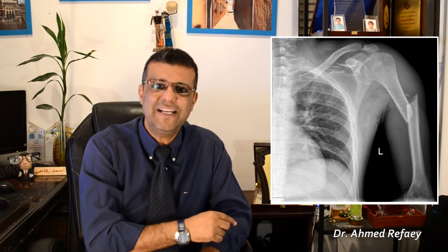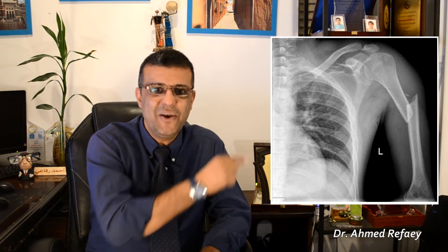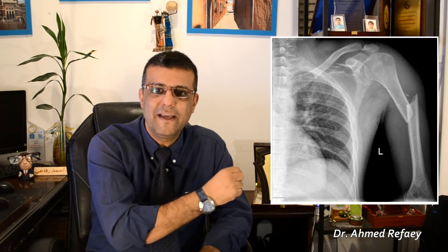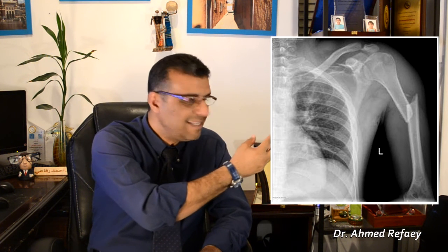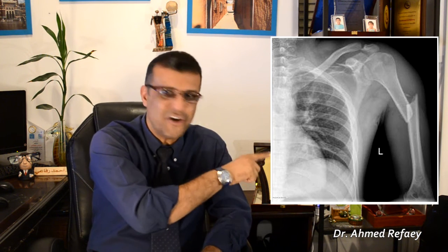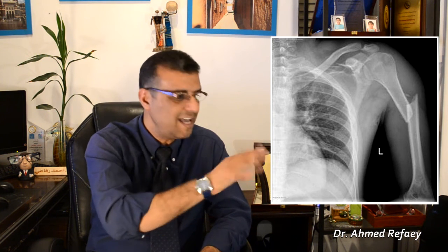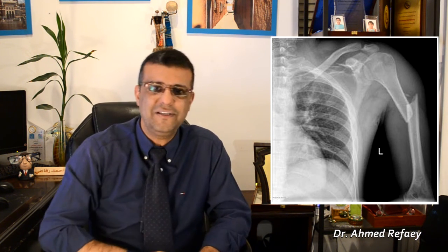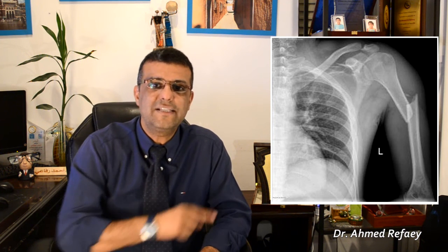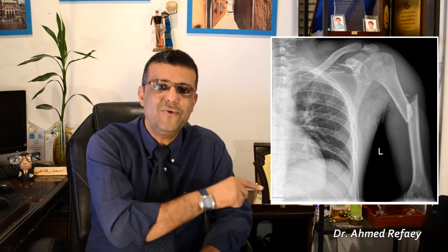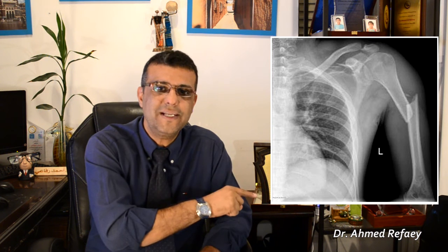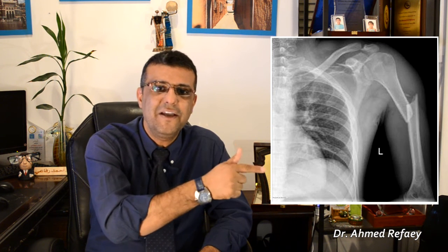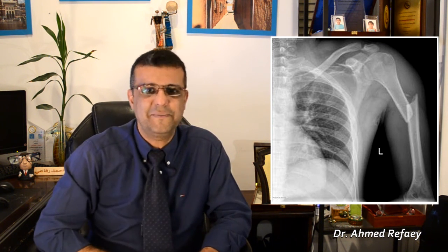There is also lateral displacement seen as a lateral offset of the distal bone fragment. Additionally, there is rotation. Looking at the shoulder joint, the humeral head appears to be projected laterally, while the elbow joint is projected in the anteroposterior position. So the full description is: complete, oblique, comminuted fracture of the mid-shaft of the left humerus associated with rotation, shortening, medial angulation, and lateral displacement.